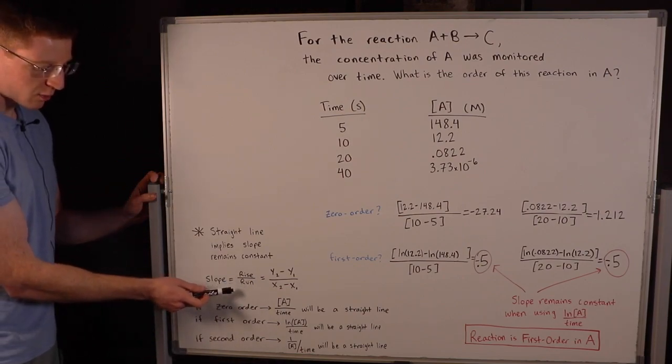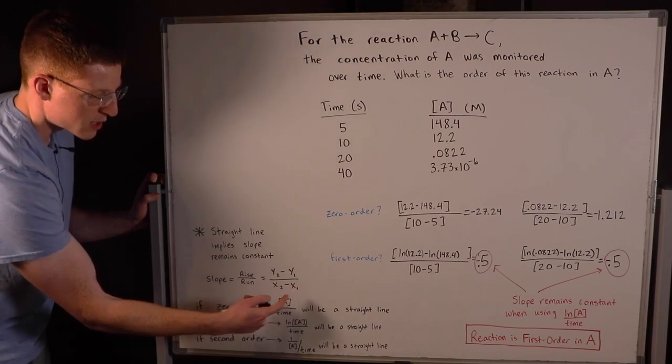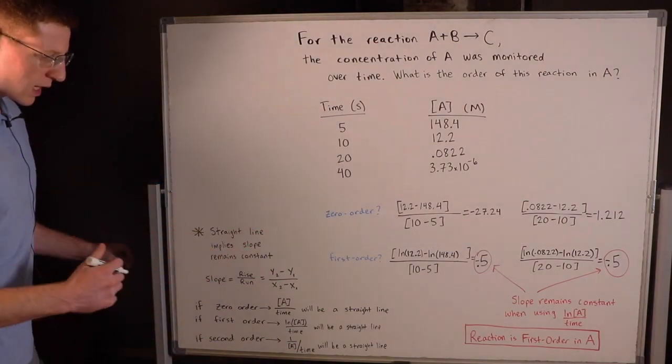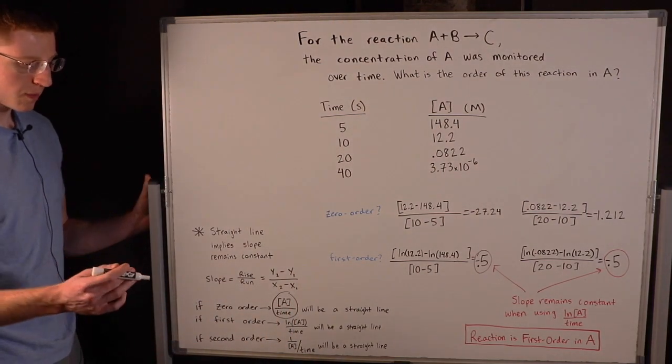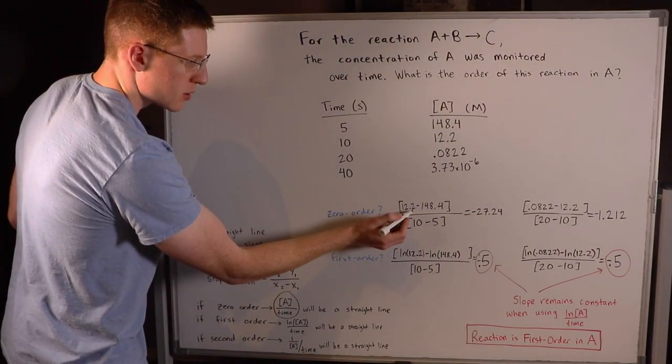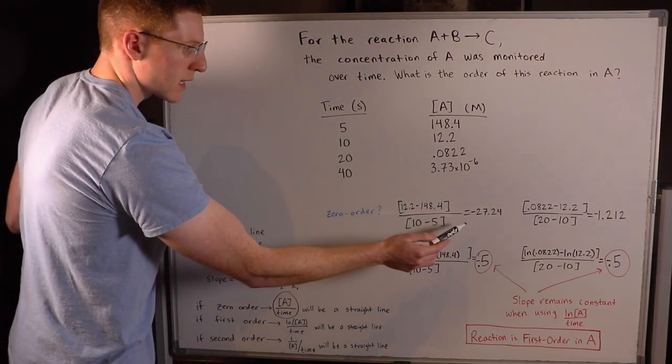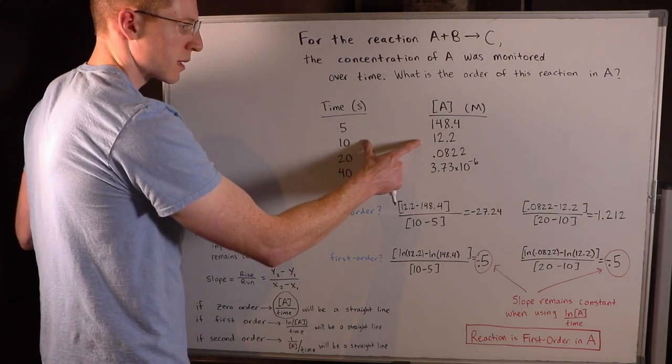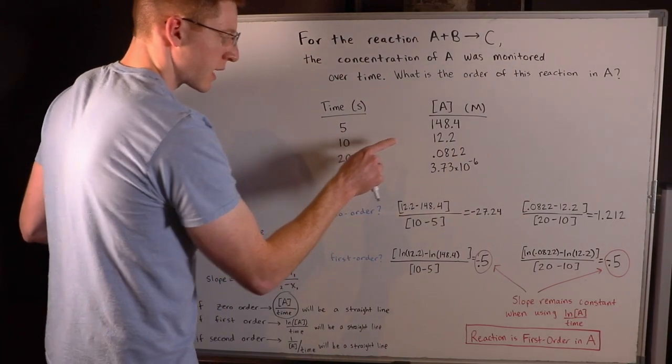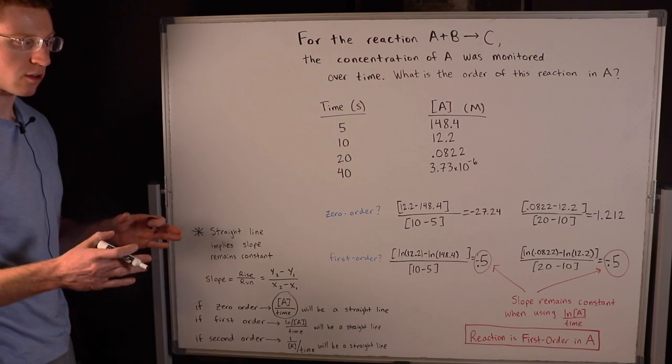So how do we test all of this? We have to remember that slope equals rise over run, or we take a second Y value minus a previous Y value over a second X value minus a previous X value. That's exactly what I did using this data here. I first tested whether the reaction was zero-order with respect to A. So the concentration of A, I started with my second point and went back to my first. My Y₂ was 12.2, my Y₁ was 148.4, and my X₂ was 10, X₁ was 5. That gave me a slope of -27.24. Then I tested from my second point to my third point, and you can see that the slope changed. So this must not be a straight line. The reaction must not be zero-order with respect to A.